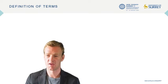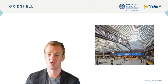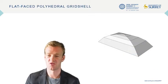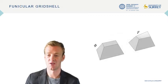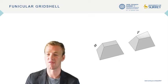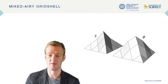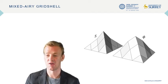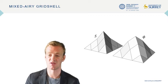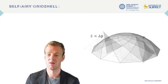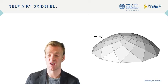First of all, it is important to define our key terminology. A grid shell has a collection of bars in space which approximates a surface. A plain-faced grid shell has planar faces and is a lift of the form diagram. Funicular grid shells are self-supporting without bending. The axial forces relate to a plain-faced airy stress function even if the grid shell itself may not be plain-faced. Some grid shells are plain-faced and funicular. If the polyhedra describing the airy stress function and grid shell are different, this is called a mixed airy grid shell. In the special case where the airy stress function is a scaled version of the grid shell, this is a self-airy grid shell.